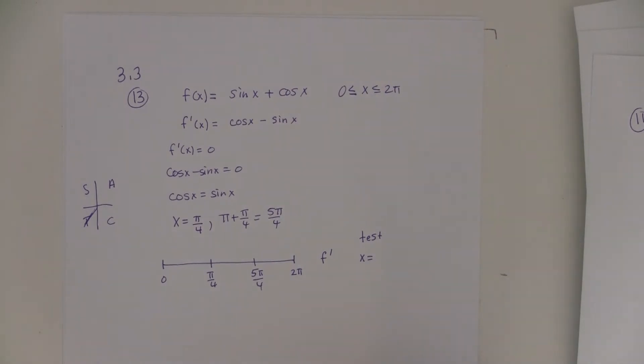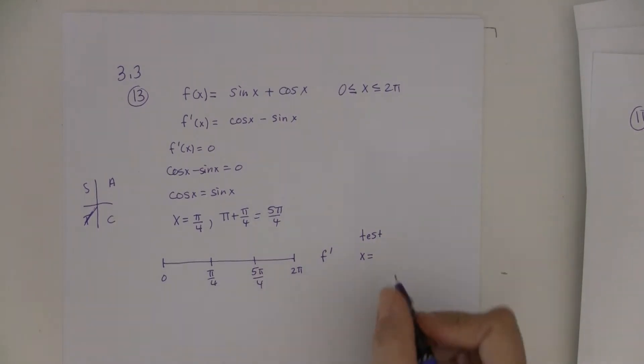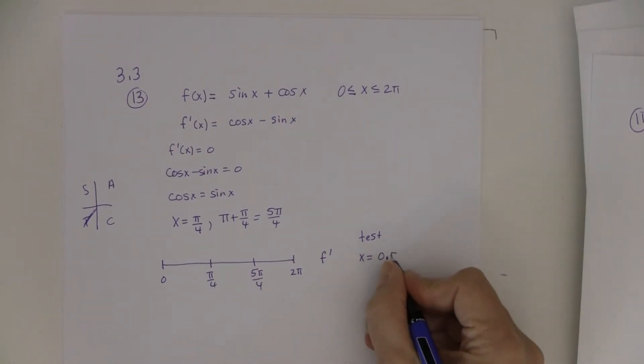You can get crazy and say I'm going to test pi over 12 or something like that. But I'm not going to know that value off the top of my head. Maybe I could test pi over three. But me, I'm kind of thinking this is 3.14 divided by four. So this is around 0.75. So if I check 0.5, I'll for sure be over there.